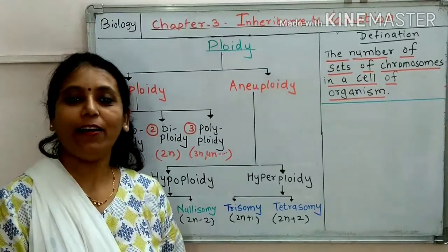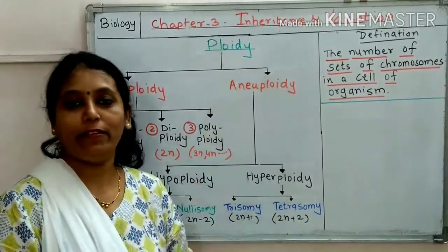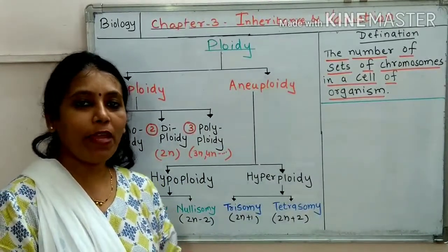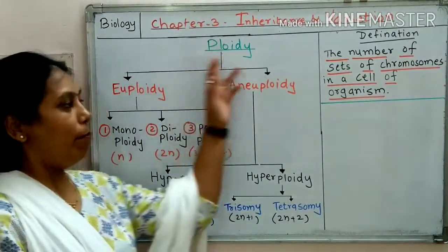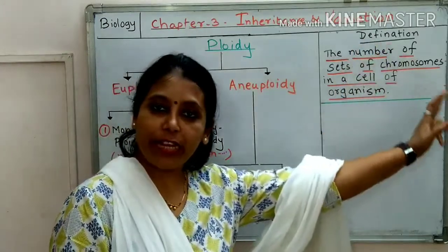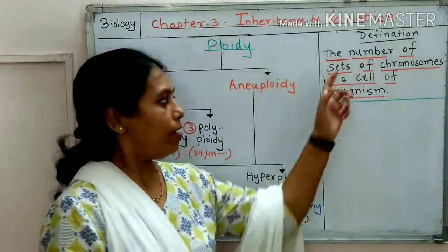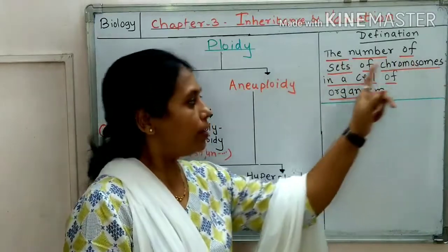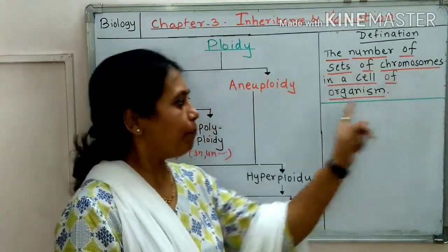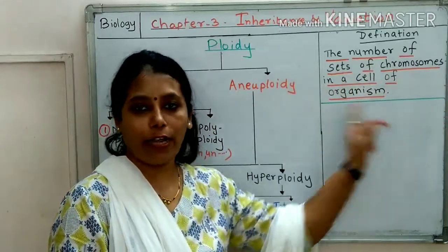Hello everyone, our today's topic is Ploidy. Now let us study what do you mean by Ploidy. Here I have written the definition of Ploidy. Ploidy is the number of sets of chromosomes in a cell of an organism.